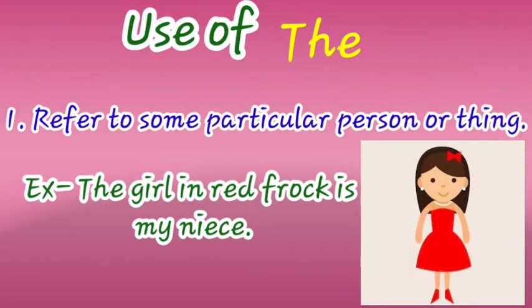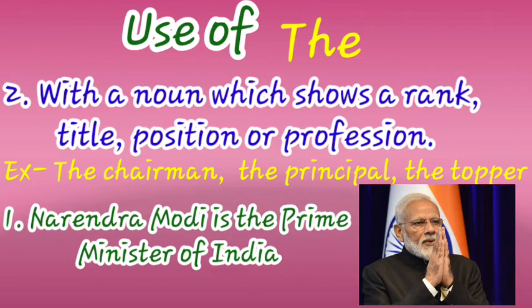Now the uses of 'the.' The first use is to refer to some particular person or thing. Before a noun pointing to a specific person or thing, we use 'the.' For example: 'The girl in the red frock is my niece.' Here we are pointing to a particular girl — the one wearing a red dress. That is a particular girl, so we use 'the' before 'girl.'